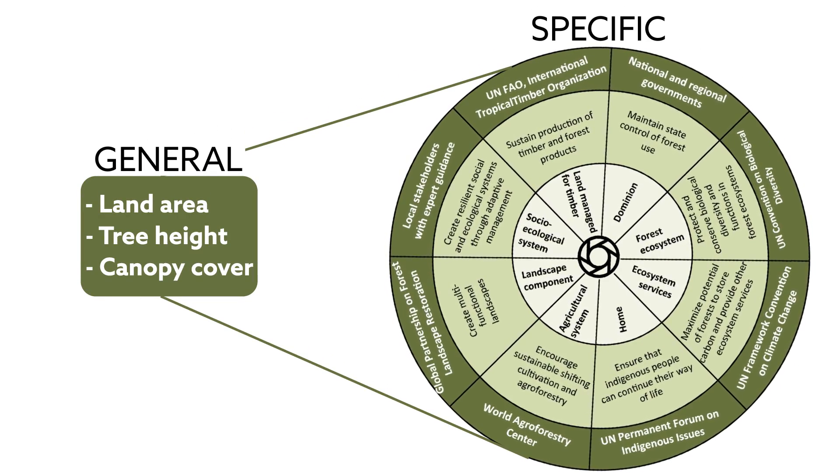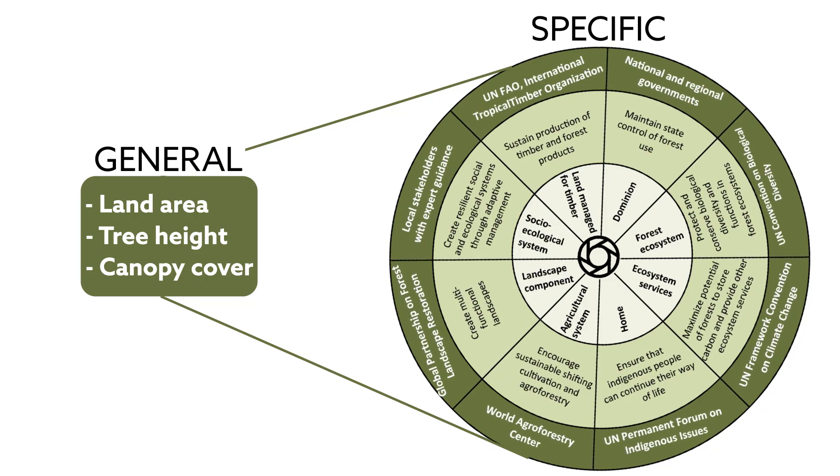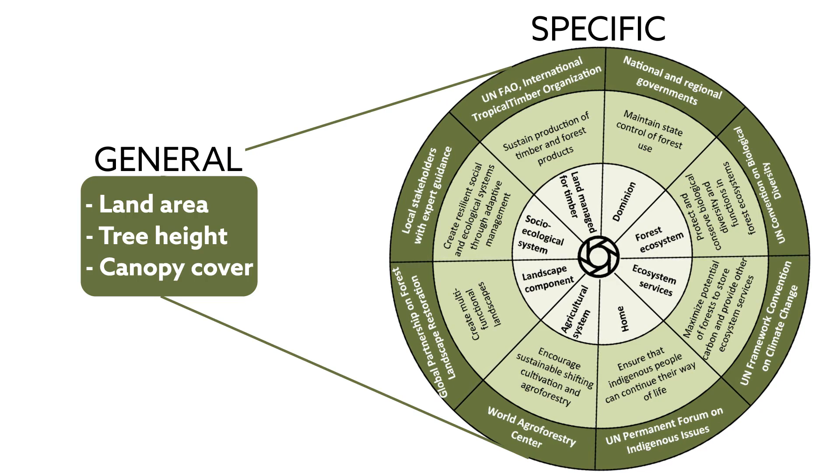Consider a patch of lush native rainforest. If this forest is cleared and replaced with a eucalyptus, rubber, or oil palm plantation, the same definition of forest applies despite dramatic changes in ecosystem services and socioeconomic outcomes.